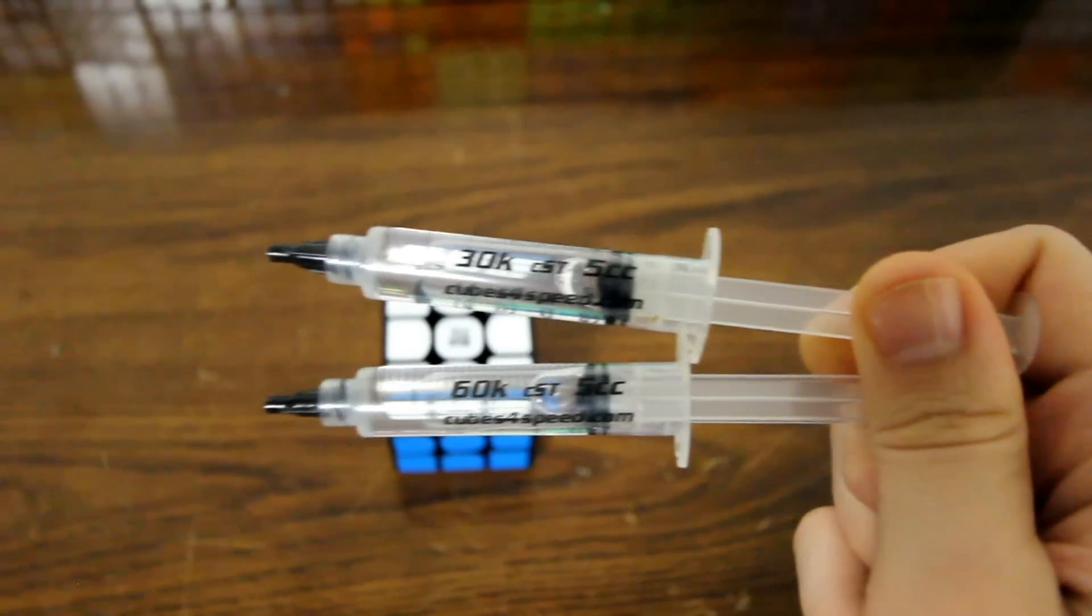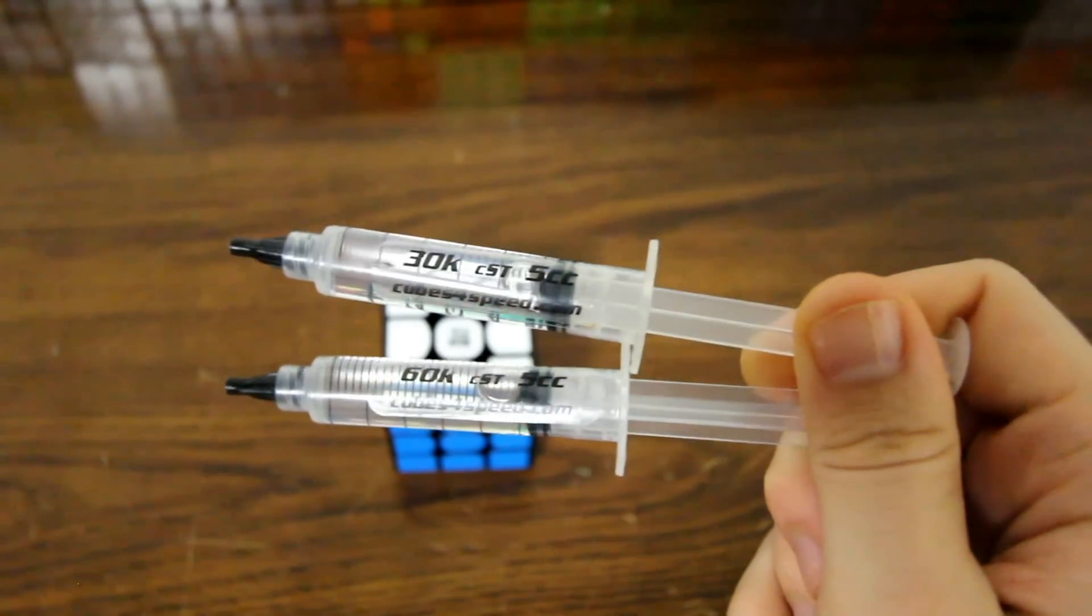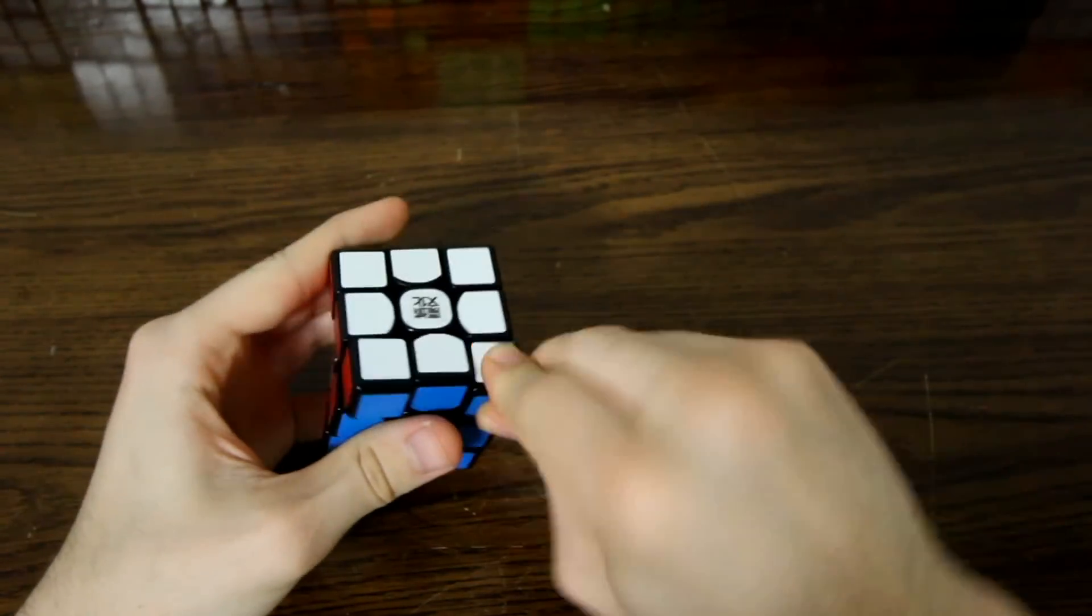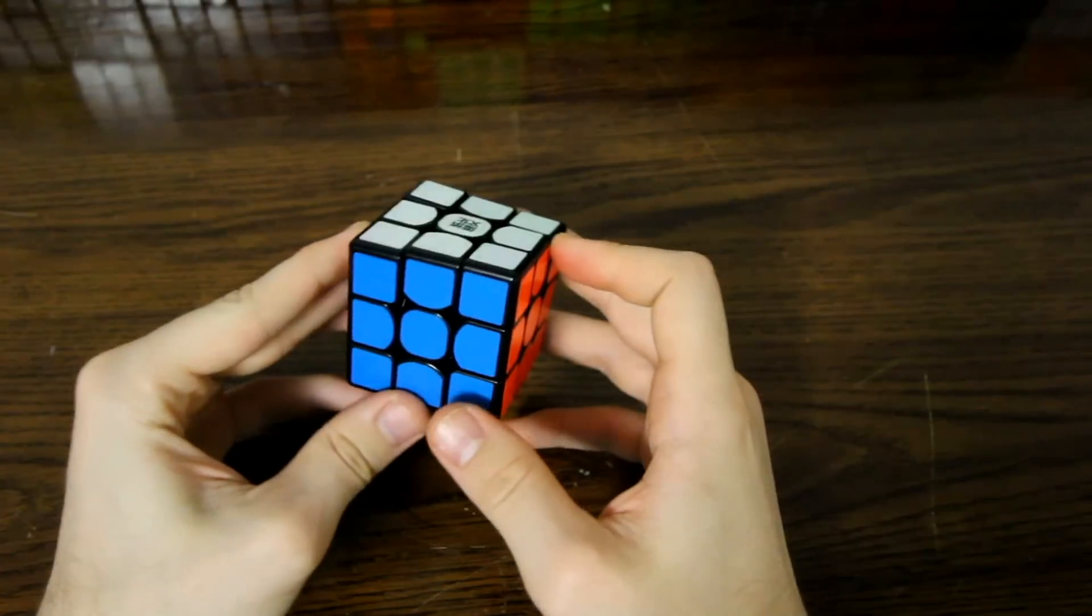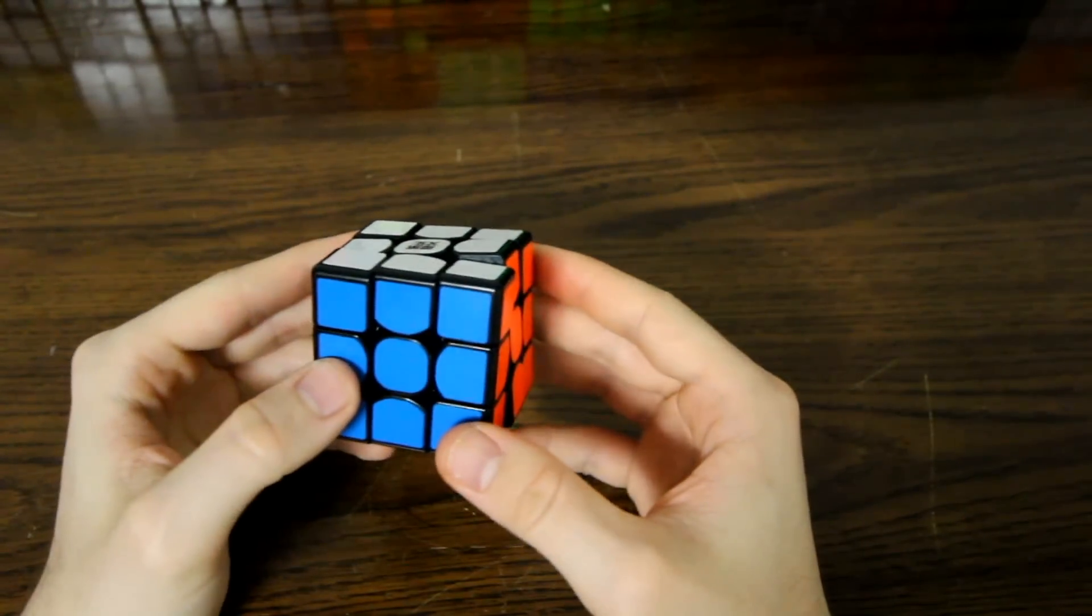For this cube, I would recommend 30K or 60K from cubesforspeed.com. You can kind of twist the corners sort of easily when it's just sitting like this, but I've never gotten a corner twist in a solve, or a pop for that matter.